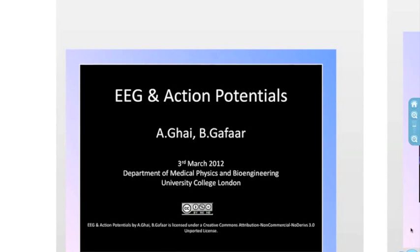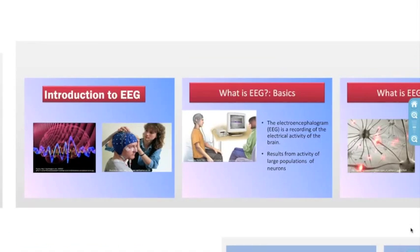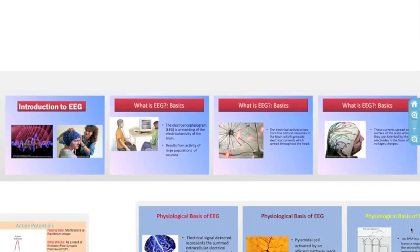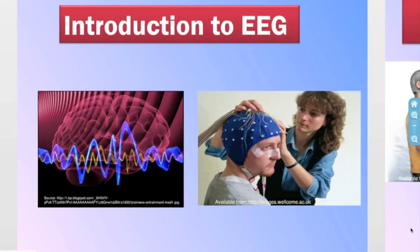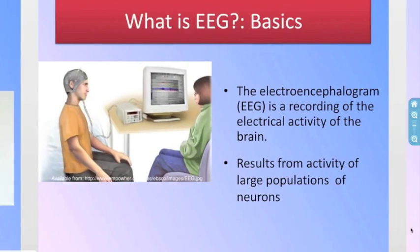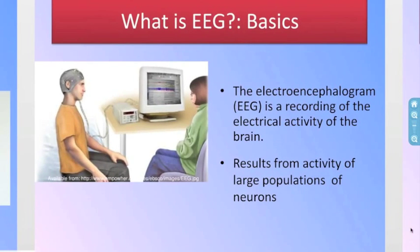I'm going to talk about EEGs and action potentials. I'm going to provide a brief introduction to an EEG. So, what's an EEG? The EEG, also known as an electroencephalogram, is a recording of the electrical activity of the brain.